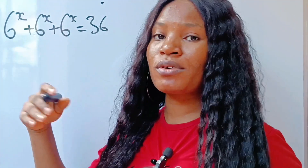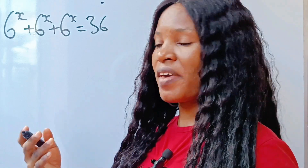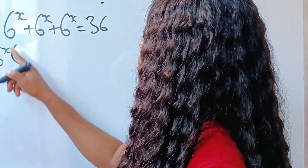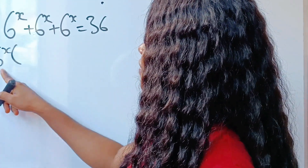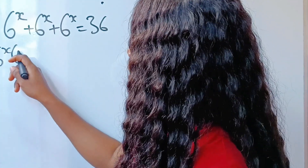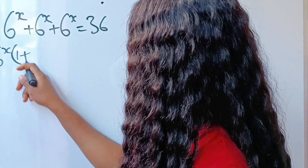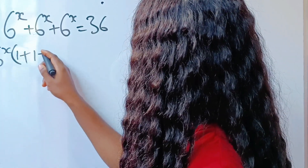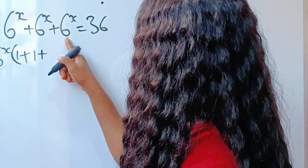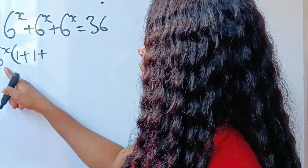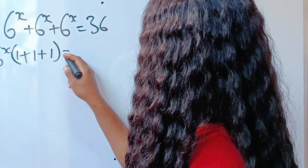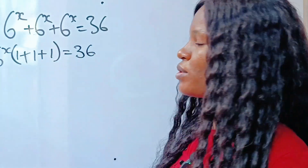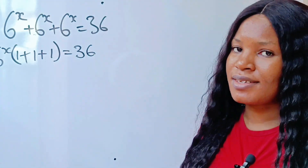What do they have in common? 6 to the 4x. So let's factorize that out. When this is divided by itself, you have 1. When this is divided by itself, you have 1. When this is divided by itself, you have 1 as well. And this is equal to 36.